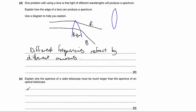Part A. Explain why the aperture of a radio telescope must be much larger than the aperture of an optical telescope. This question is related to diffraction. Diffraction occurs when a wave passes through a gap and spreads out. Now, you get maximum diffraction when gap size is equal to the wavelength of the wave that's approaching it.